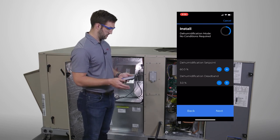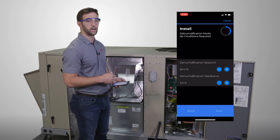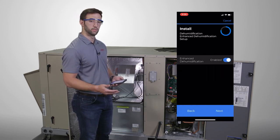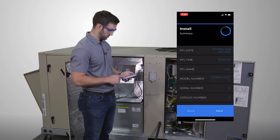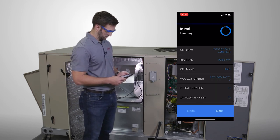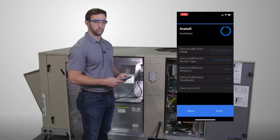And from there, even with units with Humidotrile or hot gas reheat, we will still have the option to enable enhanced dehumidification through the mobile app. And so in this one, we're going to go ahead and click yes. And there you have it. So now you have a unit configured with Humidotrile operation.